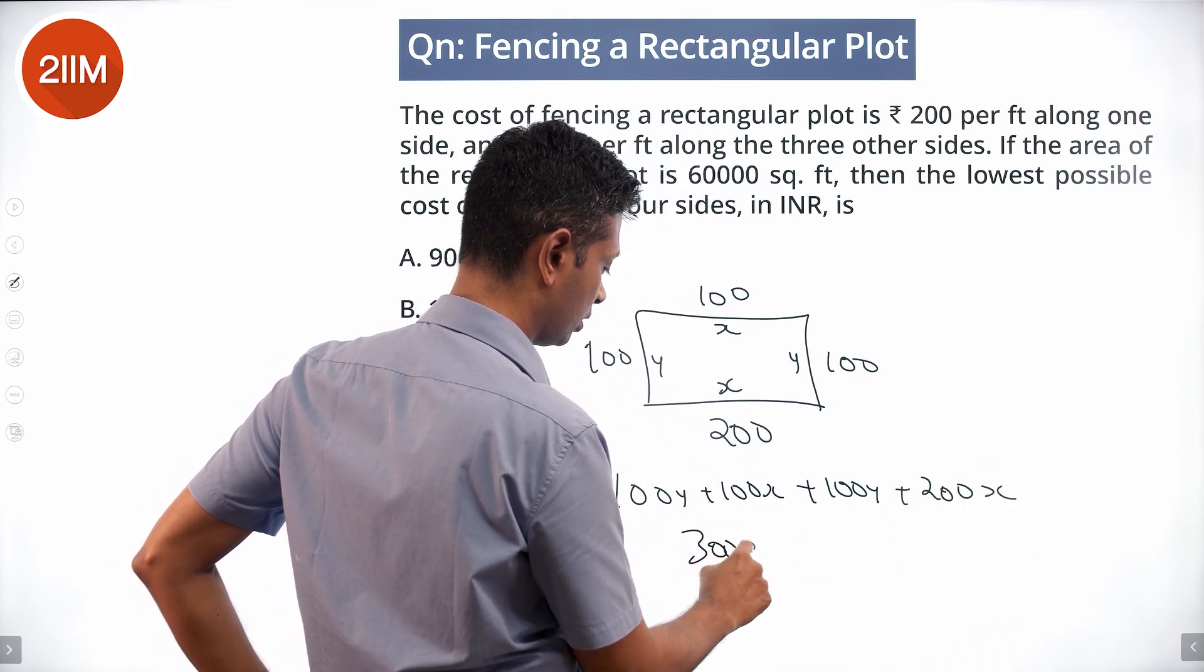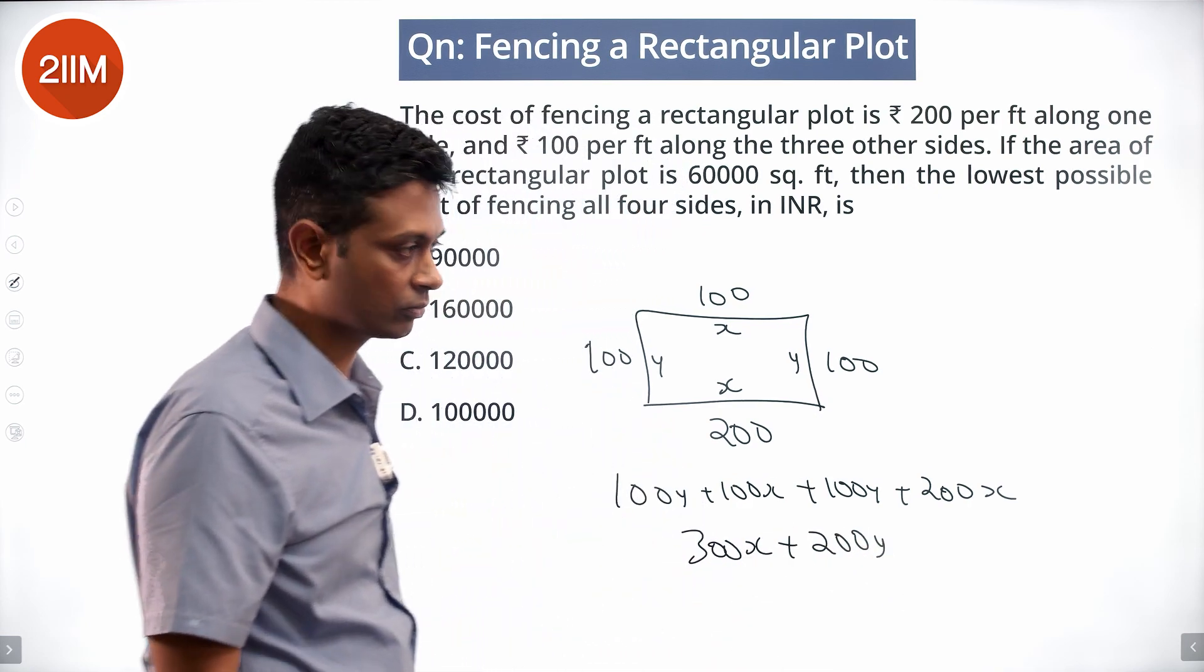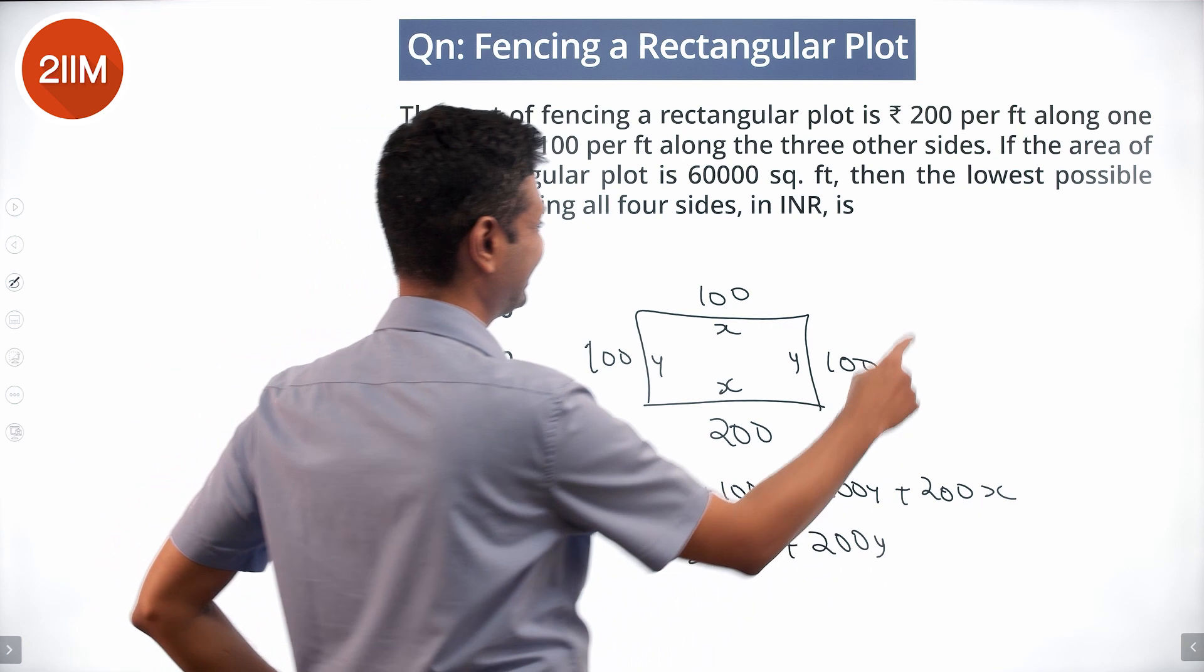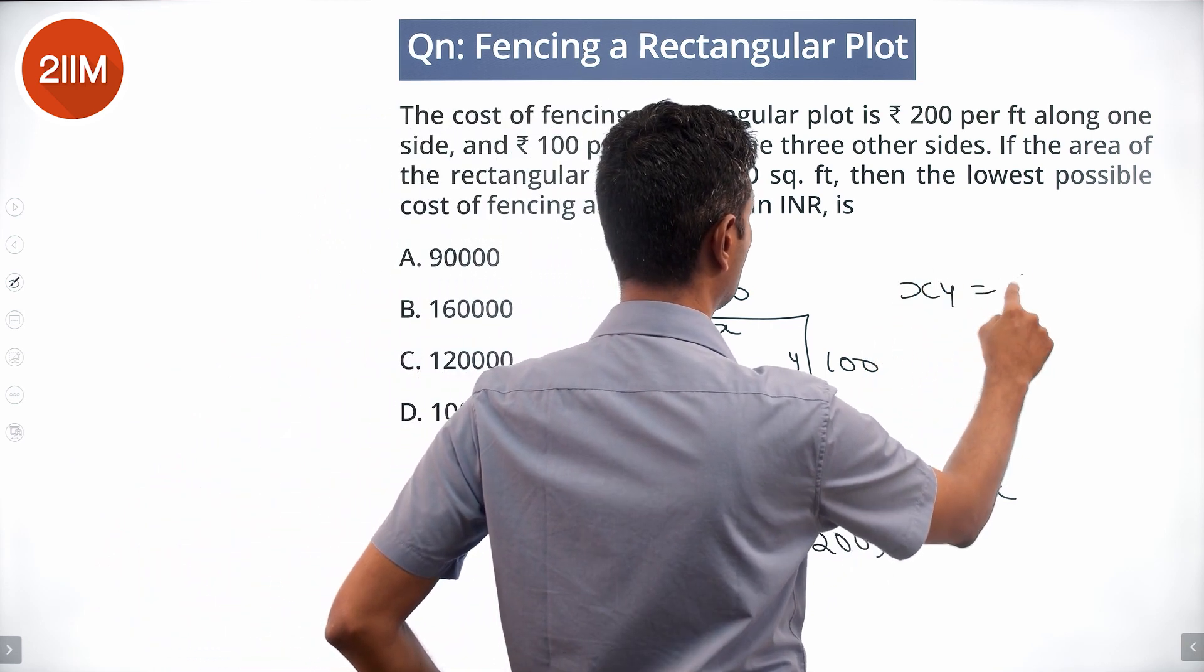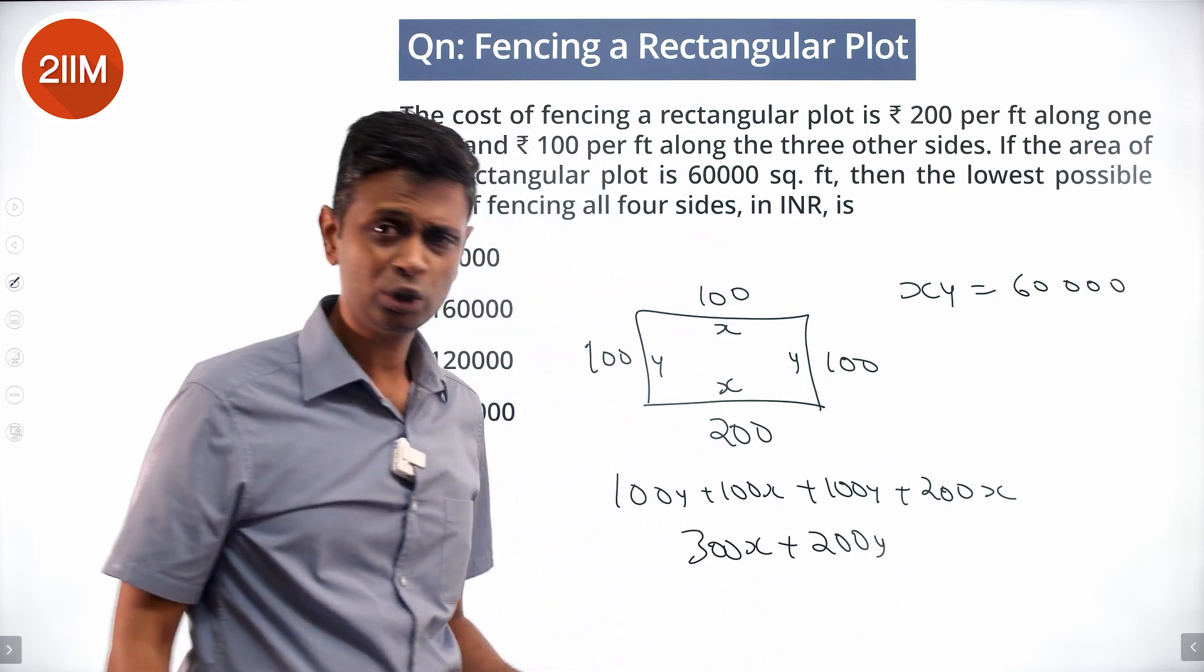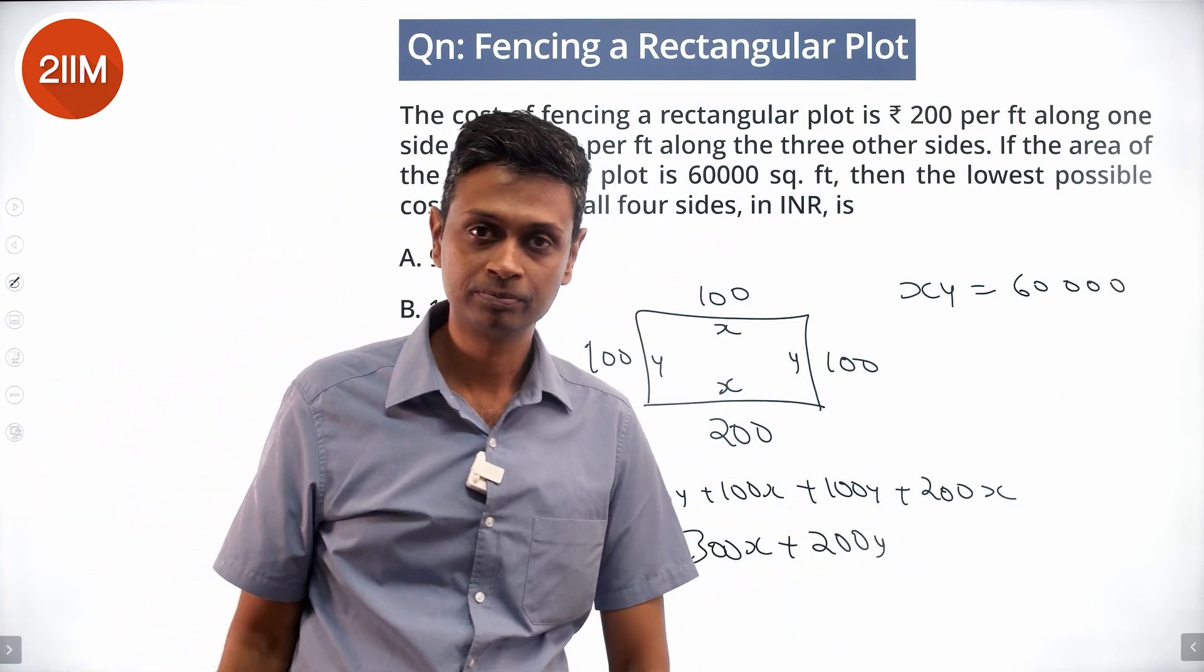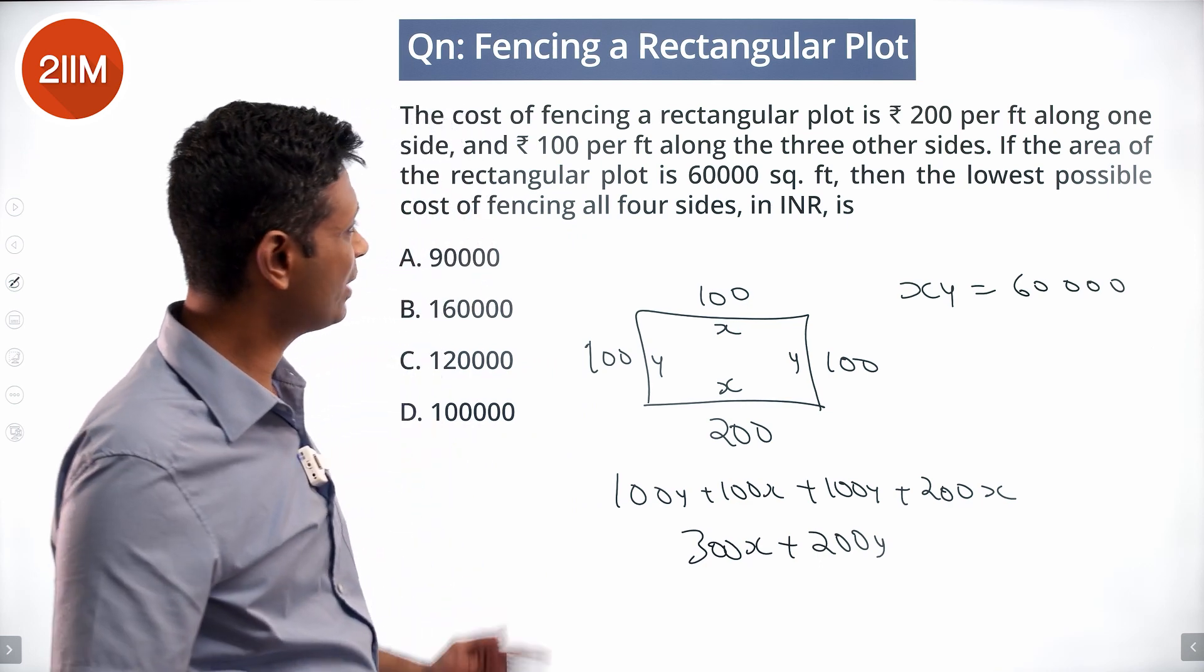This is 300X plus 200Y. We know that X into Y, the area, is 60,000. We want to find the minimum possible value of 300X plus 200Y. 300X plus 200Y should be as small as possible.